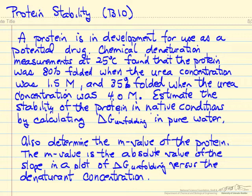So we want to use these data to make an estimate of the stability of the protein in the native conditions, namely when there's no urea present, by calculating delta G of unfolding in pure water. We'll make some assumptions about the relation between delta G and the urea concentration, and these assumptions involve a linear plot. And so we want to determine a term that's referred to as the M value of the protein, and this is the absolute value of the slope of delta G unfolding versus the urea concentration.